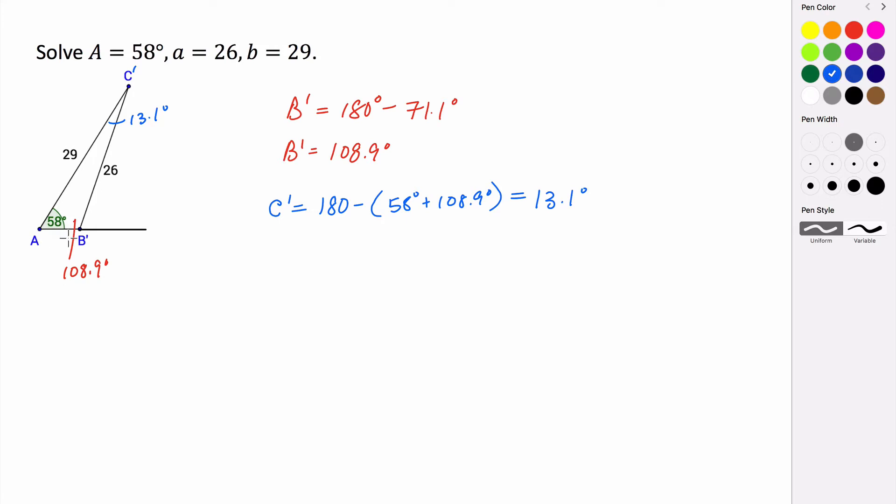And now we just have to find the length of C'', this little side here. We're going to just use law of sines. So C divided by the sine of 13.1 degrees equals 26 divided by the sine of 58 degrees.